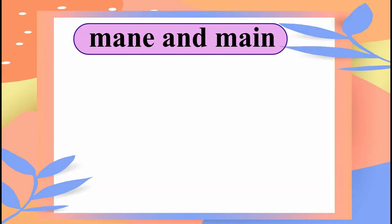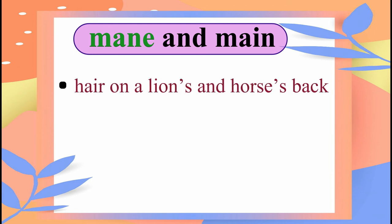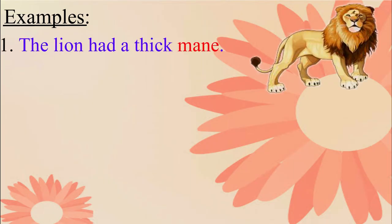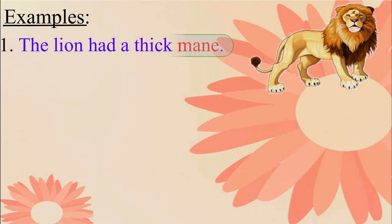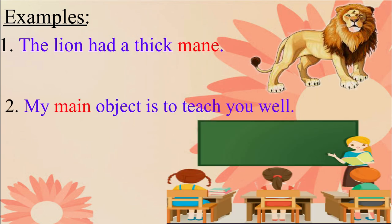Again, the next set of words have the same sound but different meanings: M-A-N-E, 'mane,' and M-A-I-N, 'main.' 'Mane' means the hair on a lion's or horse's back, whereas 'main' means chief. Please repeat these sentences after me: The lion had a thick mane. My main object is to teach you well.